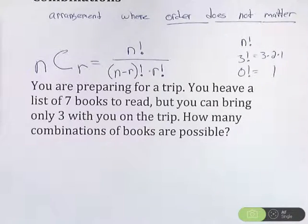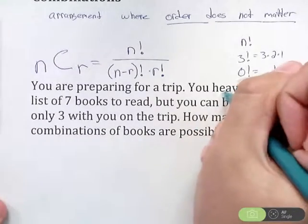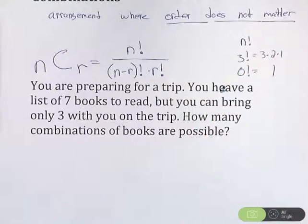First example, you are preparing for a trip. You have a list of 7 books to read, but you can bring only 3 with you on the trip. How many combinations of books are possible. When you're going through these problems, you need to ask yourself, does order matter or not?